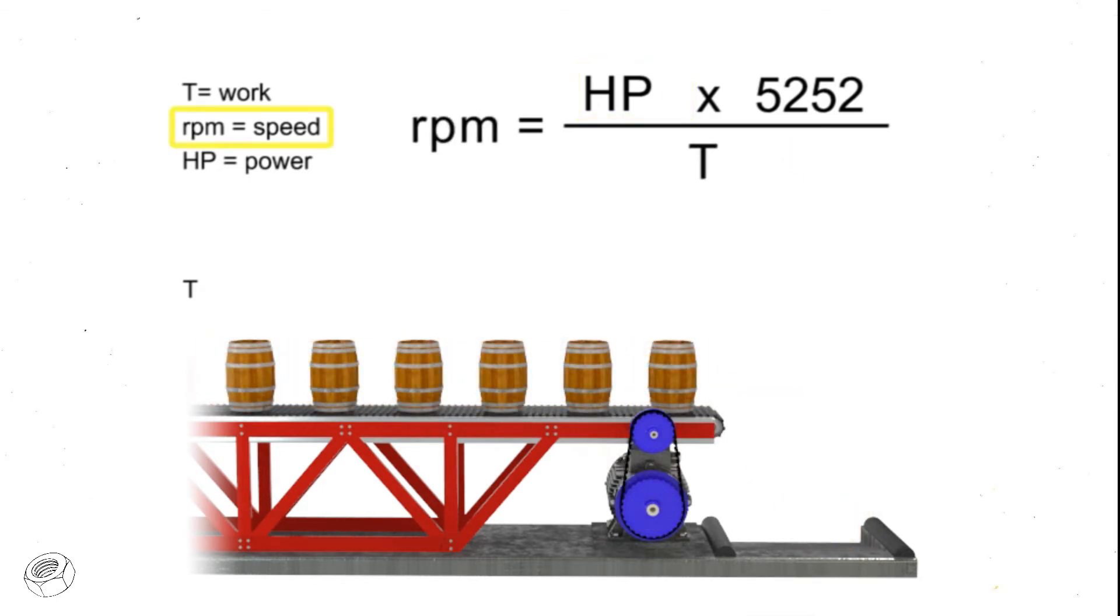If speed remains constant, then torque and horsepower are proportional. As the torque increases, horsepower also increases to maintain constant speed. As the torque decreases, horsepower also decreases to maintain constant RPM.